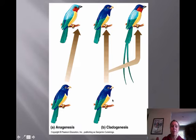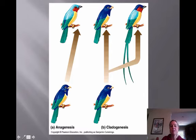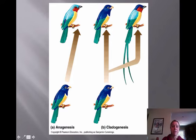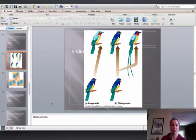Cladogenesis is where you have your original species that's still around, but it branches off into a separate species as well. The original one is still there, and then you have its descendants. Anagenesis is more what they think happened with us — we don't have Neanderthals or Cro-Magnons around because we replaced them in the fossil record. With cladogenesis, there are many examples where the original is still there and it probably evolved into something else.